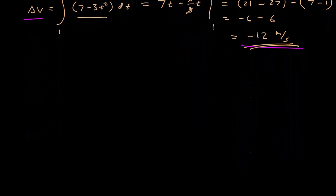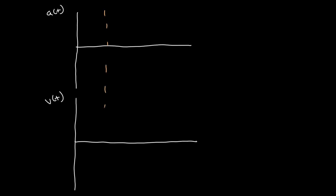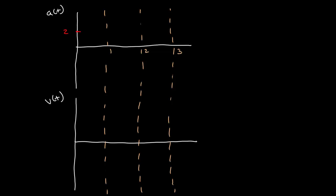Now let's take a look at a graphical representation of this idea. I'm going to draw a graph with acceleration on top and velocity below, keeping the same time scale. Each line represents one second: 1 second, 2 seconds, 3 seconds. I have some acceleration equal to 2 meters per second squared for 1 second.